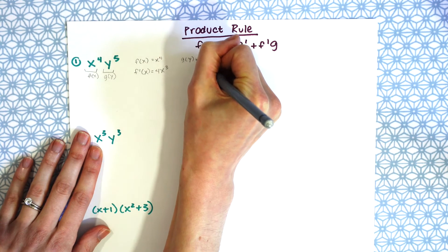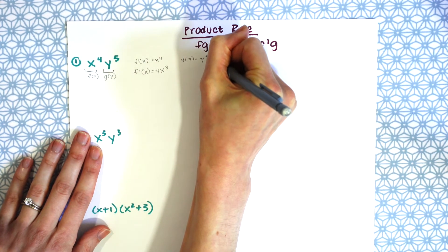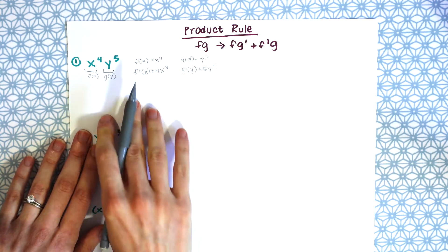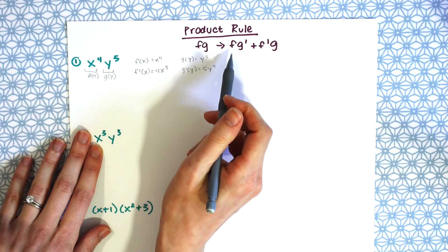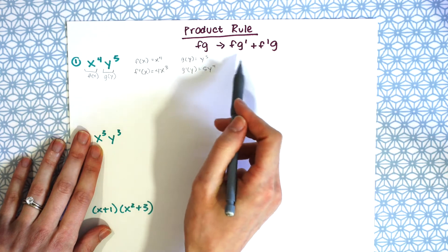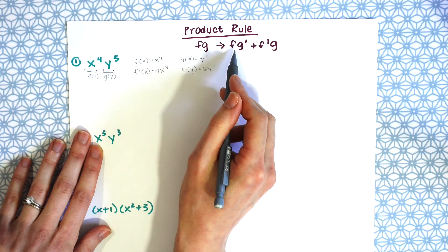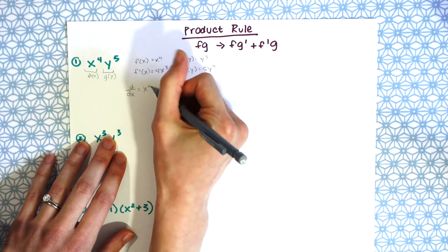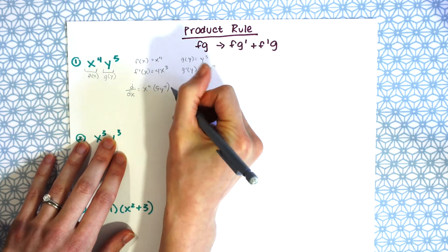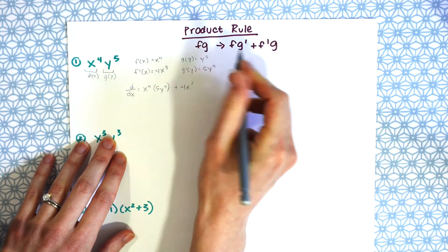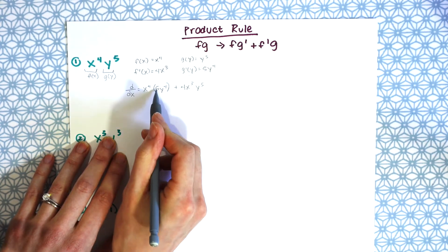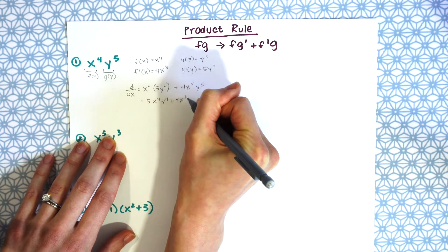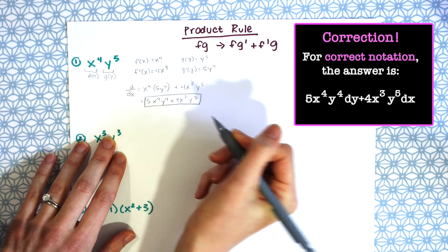And g of y equals y to the fifth, so g prime of y equals 5y to the fourth. Now plugging into the product rule formula: f times g prime plus f prime times g gives us x to the fourth times 5y to the fourth plus 4x cubed times y to the fifth, which simplifies to 5x to the fourth y to the fourth plus 4x cubed y to the fifth.